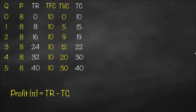Profit equals total revenue minus total cost: 0−10=−10, 8−15=−7, 16−19=−3, 24−22=2, 32−30=2, 40−40=0.